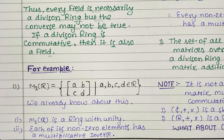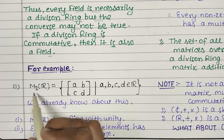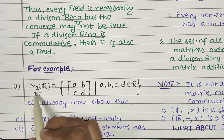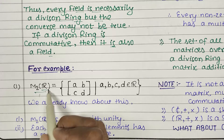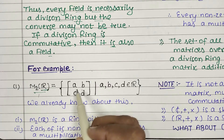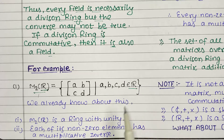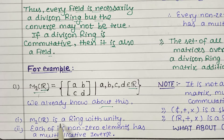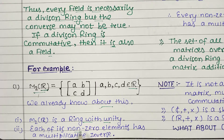For example, let us take the matrix example. Our first example is the set of 2×2 matrices with real number entries — not integer entries. We already know about this: first, M₂(ℝ), the set of 2×2 matrices with real entries, is a ring with unity. Second, each of its non-zero elements has a multiplicative inverse. With integer entries, not every non-zero element had an inverse, but with real entries, the inverse does exist.